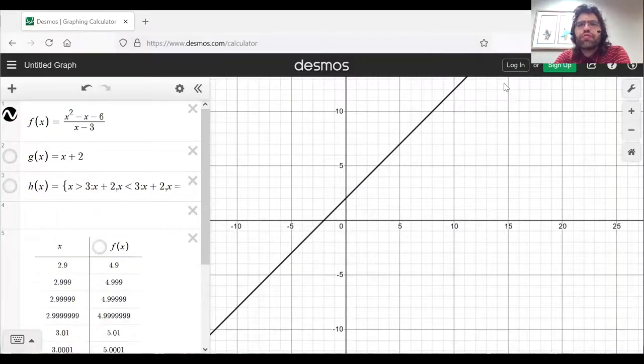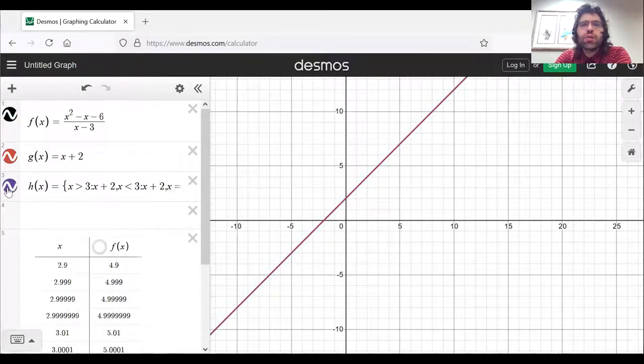But everywhere else, they're identical. Here's f. Here's g, here's h. You can see their graphs are exactly the same, except at one point, x equals three, where they're different.